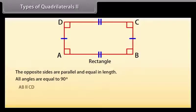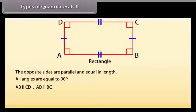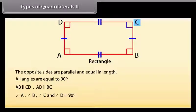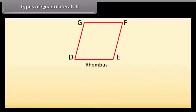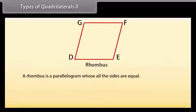Here AB is parallel to CD and AD is parallel to BC. The angles A, B, C, and D are all 90 degrees, so ABCD is a rectangle. Next is rhombus. A rhombus is a parallelogram whose all sides are equal.